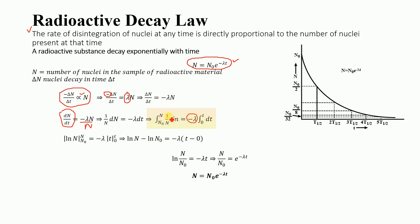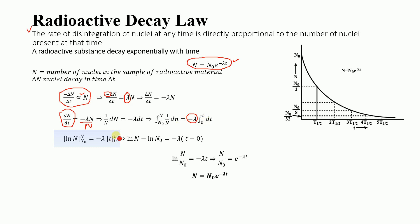We know that the integration of 1/N is equal to ln(N). We have the limits from N₀ to N on the left-hand side. On the right-hand side, −λ is a constant, and taking the integration of 1 with respect to dt gives t, with limits from 0 to t.